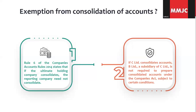So after discussing applicability, are there any exemptions from the requirement of consolidation? Yes, there are exemptions. Rule 6 of the Companies Accounts Rules 2014 states that if the ultimate holding company of the reporting company is doing consolidation, then the reporting company need not consolidate. For example, if A Limited is a subsidiary of B Limited and B Limited is a subsidiary of C Limited, then if C Limited is consolidating the accounts, it is not mandatory for B Limited to prepare consolidated accounts, subject to some conditions.